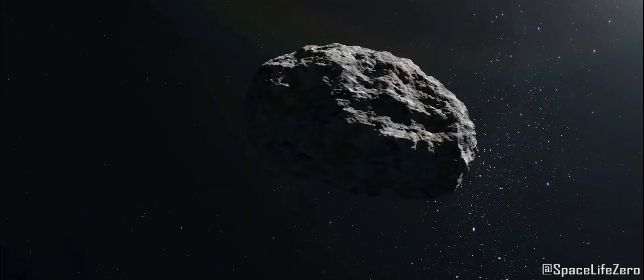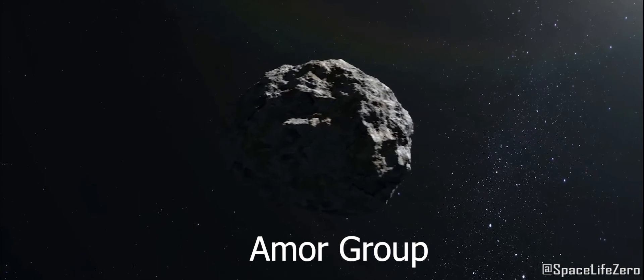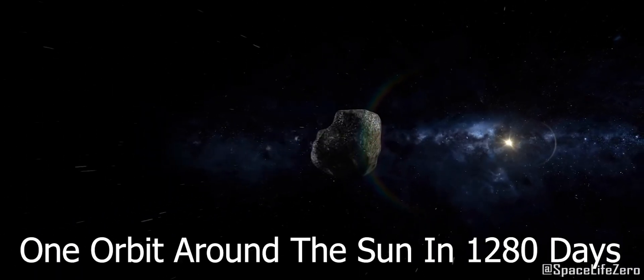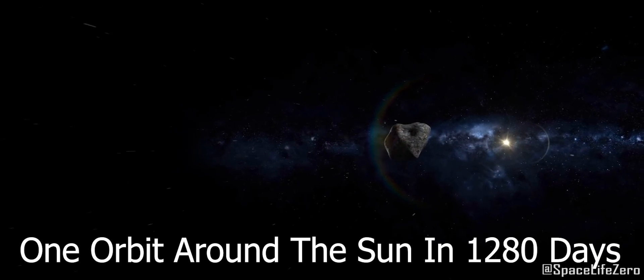This near-Earth object belongs to the Amor group of asteroids, and it takes about 1,280 days to complete one orbit around the Sun.